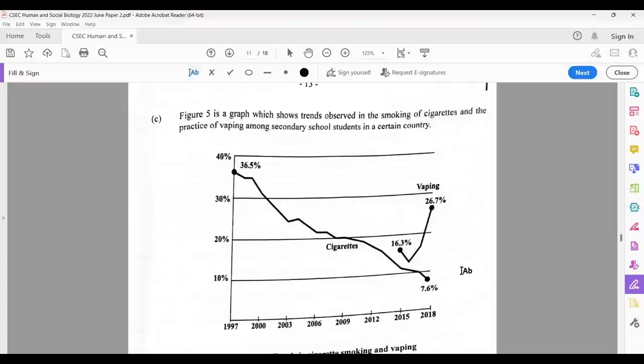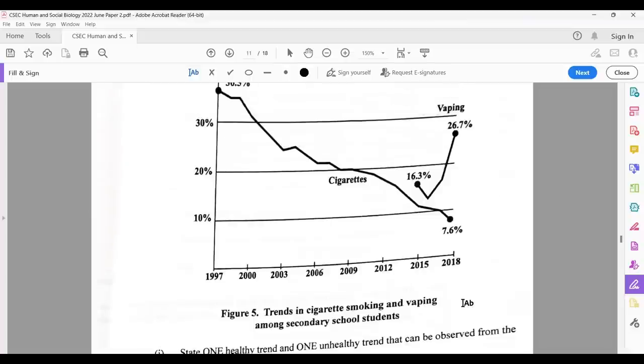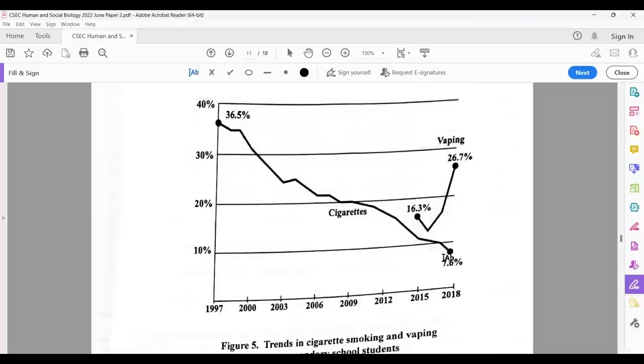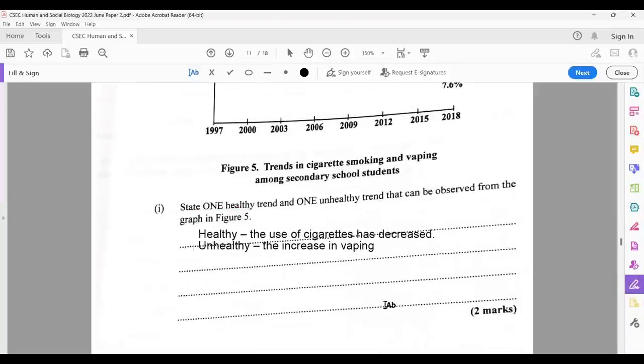Figure five is a graph which shows trends observed in the smoking of cigarettes and the vaping among secondary school students in a certain country. State one healthy trend and one unhealthy trend that can be observed from the graph in figure five. You see cigarettes going down, that's a good thing. So that's the healthy trend. But vaping going up, vaping dropped up drastically in a short space of time. That means it was height in society, which caused it to go up very quickly. No matter of about three years, it jumped up to about 26%. So you could just identify which one is your healthy and which one is your unhealthy.